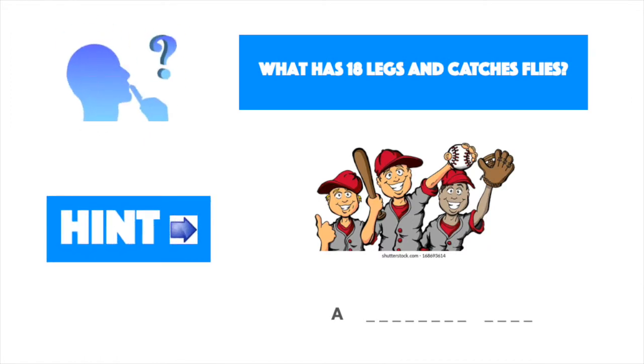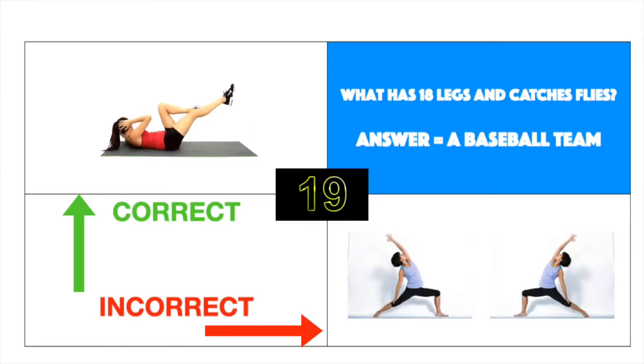What has 18 legs and catches flies? Look at the hints. Answer, a baseball team. Correct, do bicycles. Incorrect, do reverse side angles on both sides.